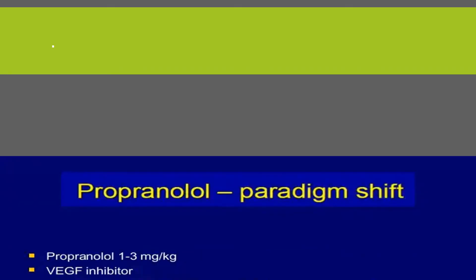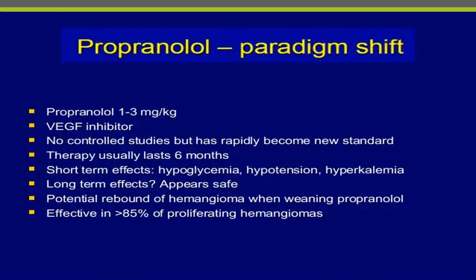Currently the most well-accepted treatment is propranolol at 1 to 3 mg per kg per day. It works by inhibiting vascular endothelial growth factor beta. There are no controlled studies, but it has rapidly become the new standard. Therapy lasts six months, and short- and long-term effects should be monitored. Potential rebound can be seen in non-proliferative types, and it is effective in more than 85 percent of proliferating hemangiomas.